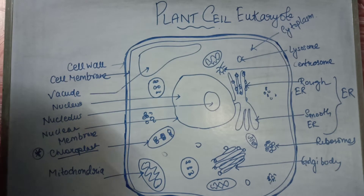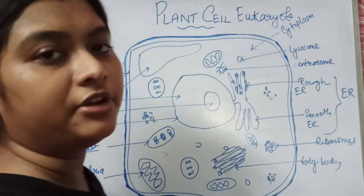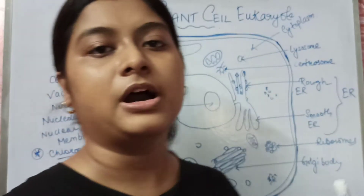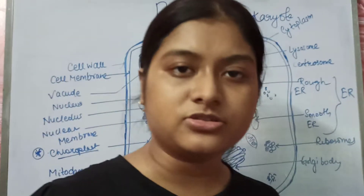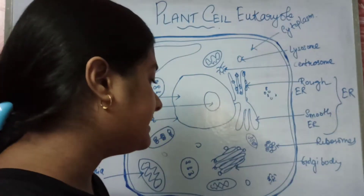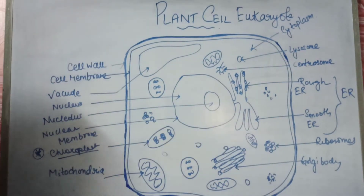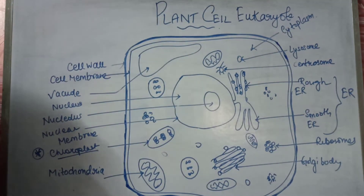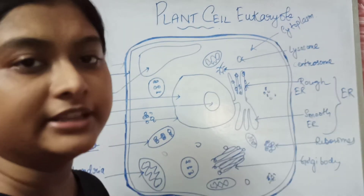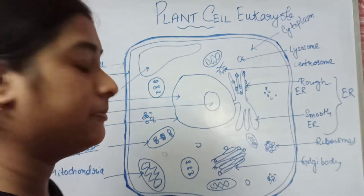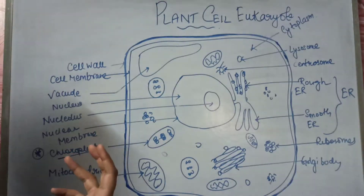Then comes the mitochondria. We all know from childhood that it is the powerhouse of the cell. The plant cell requires energy, and that energy is produced by the mitochondria in the form of ATP — adenosine triphosphate.